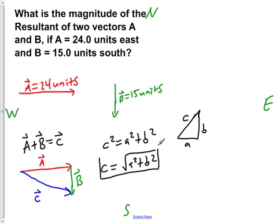Now if we apply this form to this triangle here, we would have C equals the square root of A squared plus B squared.